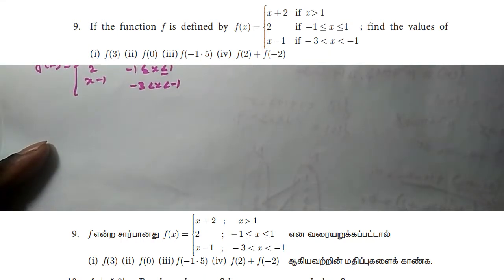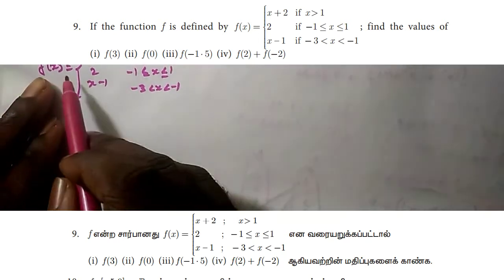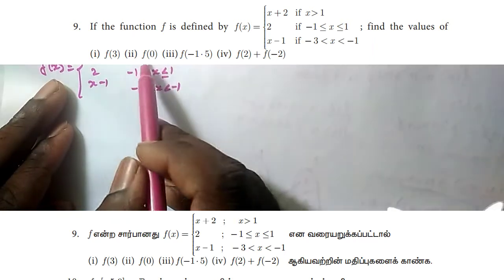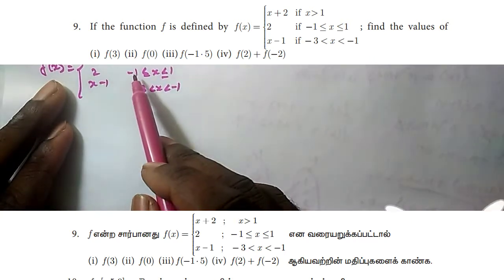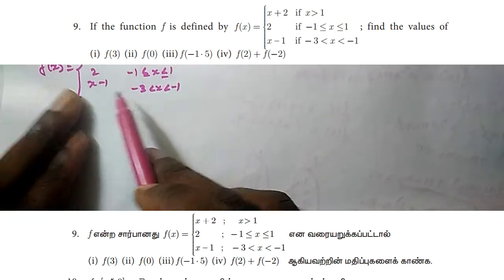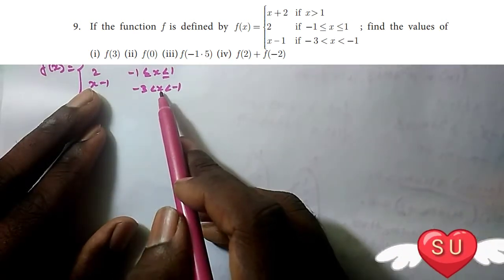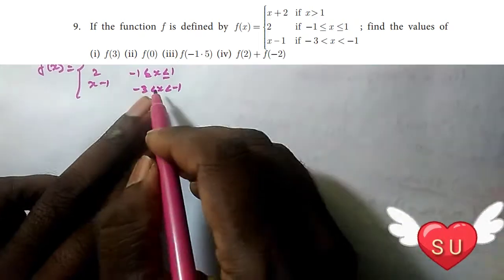Hi friends, welcome to the second video. This is Exercise 1.4, question 9, about piecewise functions. We are defining f(x) as: f(x) = x + 2 for x greater than 1; f(x) = 2 for minus 1 less than or equal to x less than or equal to 1; and f(x) = x minus 1 for minus 3 less than x less than minus 1.